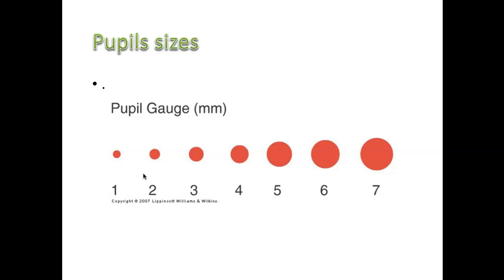Pupils can range from one up to eight millimeters depending on how much light is available. The less light, the larger the diameter the pupil will be; the more light, the smaller it will be. Most eyes, if you have a lot of light or are using a pen light, the pupil will be around a two. In very dim light it may be upwards of six or more. It just corresponds with the amount of light you're shining into the pupil.